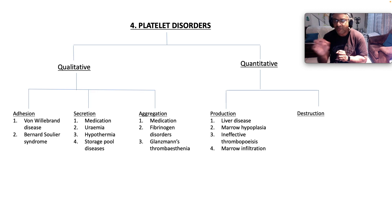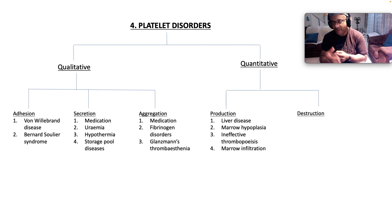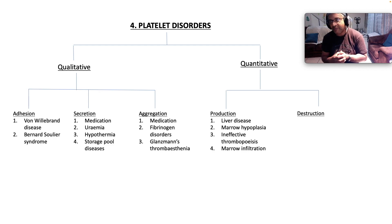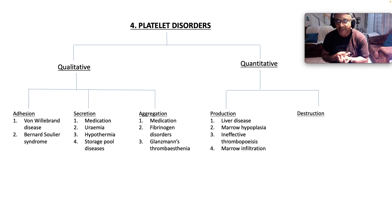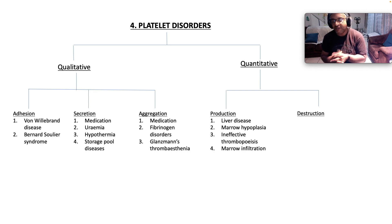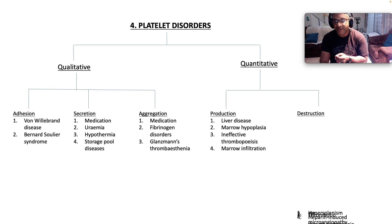What causes diminished production of platelets? Liver disease, because you can't produce thrombopoietin, which instructs the bone marrow to produce and churn out more platelets. Liver disease also causes portal hypertension, which can cause hypersplenism and chew up platelets. Also: marrow hypoplasia for whatever reason, ineffective thrombopoiesis, marrow infiltration with disseminated infection — commonly TB — or some kind of malignant process, be it leukemia or even secondaries.